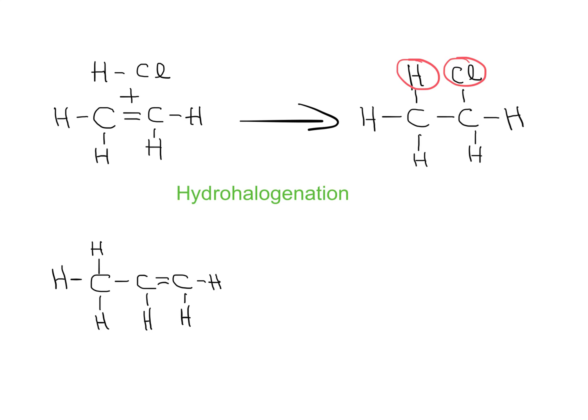You can add HCl in two different ways. In one orientation, H is on the left and Cl on the right; in the other, Cl is on the left and H on the right. Both produce slightly different products. In a real chemical laboratory you'll make both, but you'll make more of one than the other — and that's what Markovnikov's rule addresses.